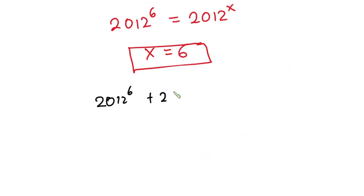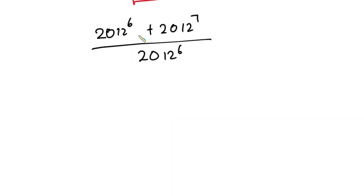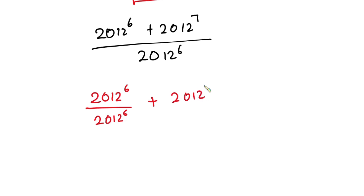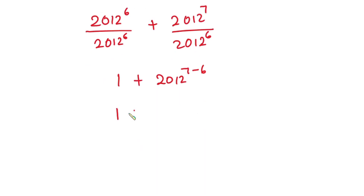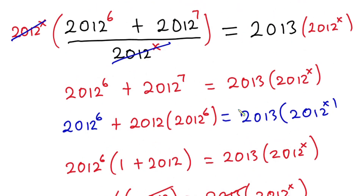Now let's verify: when x equals 6, we have (2012^6 + 2012^7) divided by 2012^6. Let's split this fraction to get 2012^6 over 2012^6 plus 2012^7 over 2012^6. The first term gives us 1, and the second term is 2012^(7−6) which is 2012^1, so we have 1 plus 2012, which is exactly 2013. This confirms our answer.